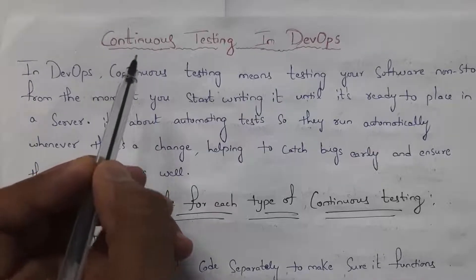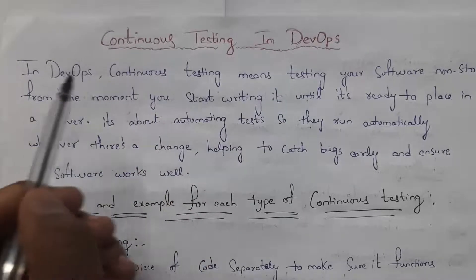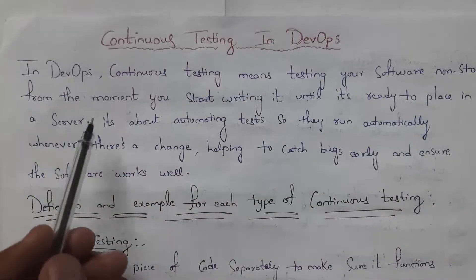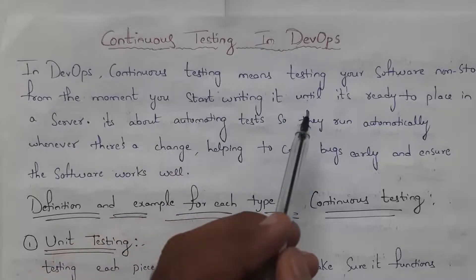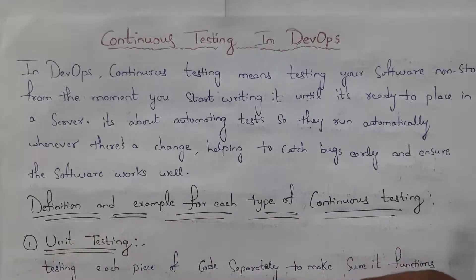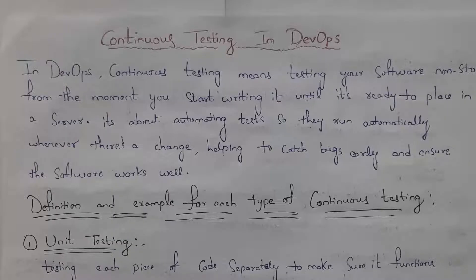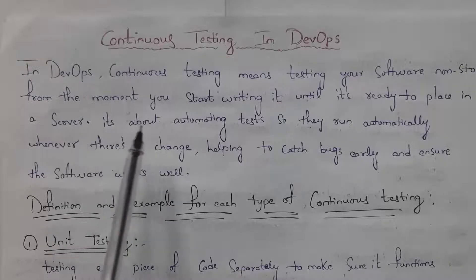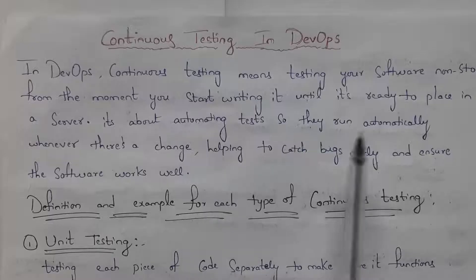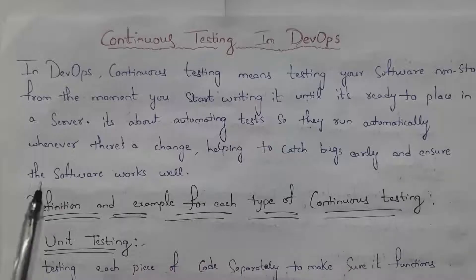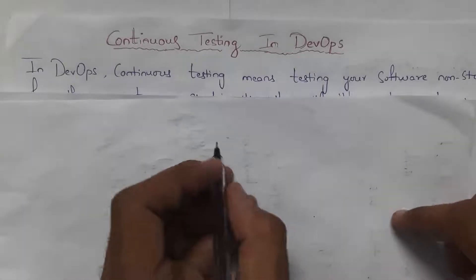Next I will explain continuous testing in DevOps. Continuous testing in DevOps means testing your software non-stop, from the moment you start writing it until it is ready to be placed in a server. All testings are performed automatically using various kinds of tools. It's about automating tests so they run automatically whenever there is a change, helping to catch bugs early and ensure the software works well.